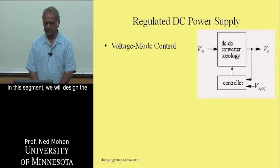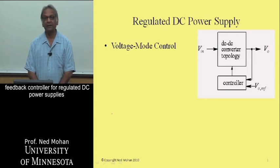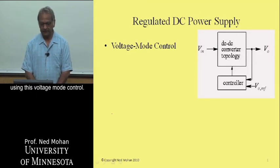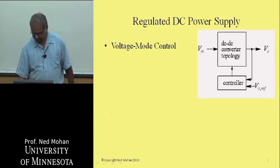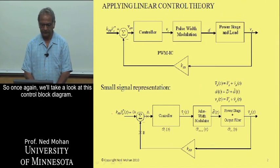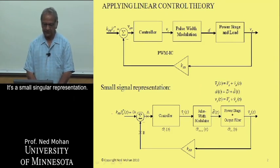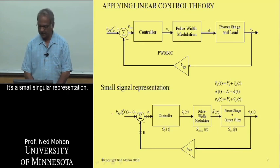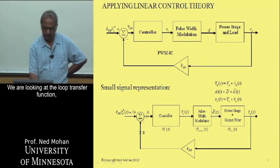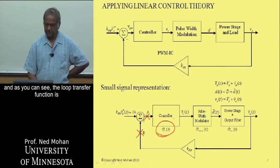In this segment, we will design the feedback controller for regulated DC power supplies using voltage mode control. We will take a look at the control block diagram, which is a small signal representation, and we are looking at the loop transfer function from A to B in order to design this controller transfer function.